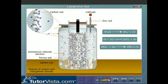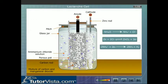As a result, the carbon rod attains positive charge due to deficiency of electrons. Thus the carbon rod becomes the anode, the positive electrode.